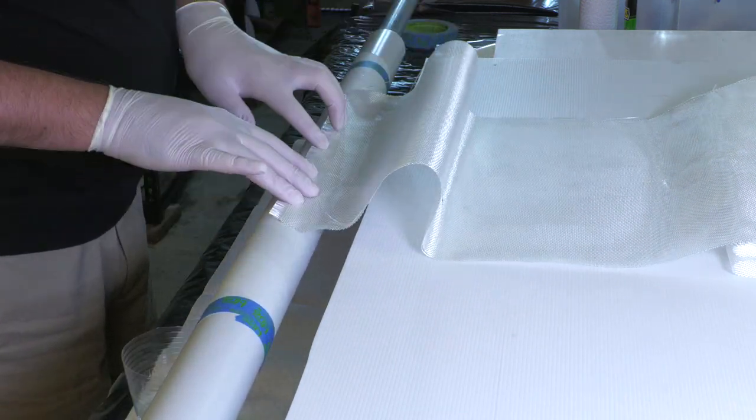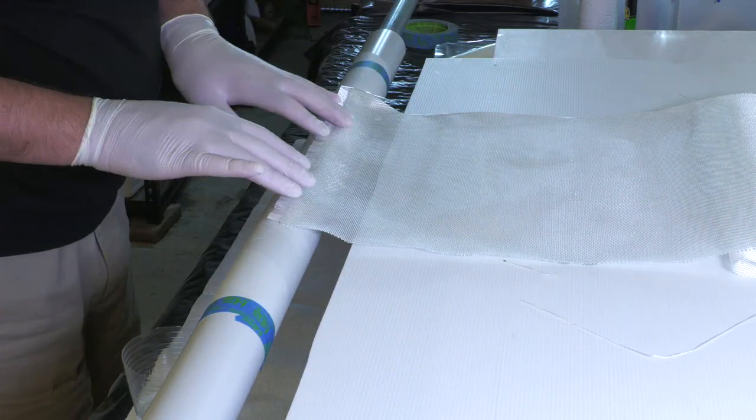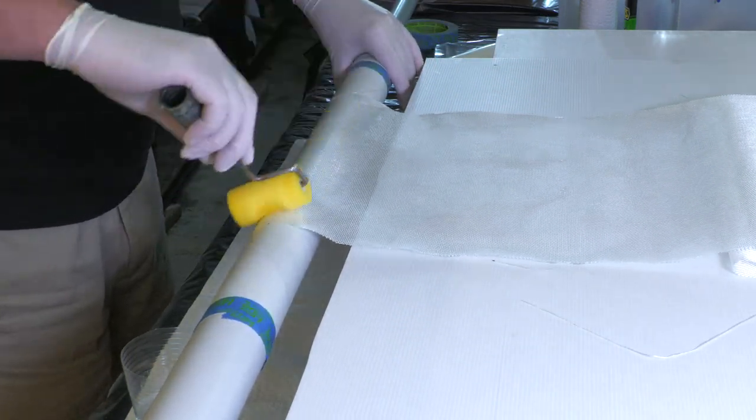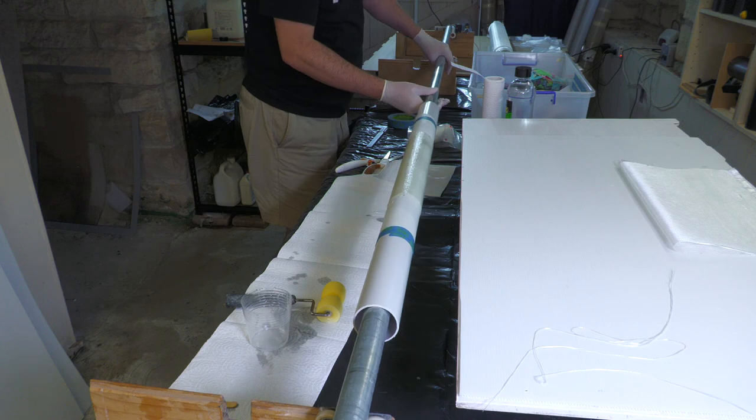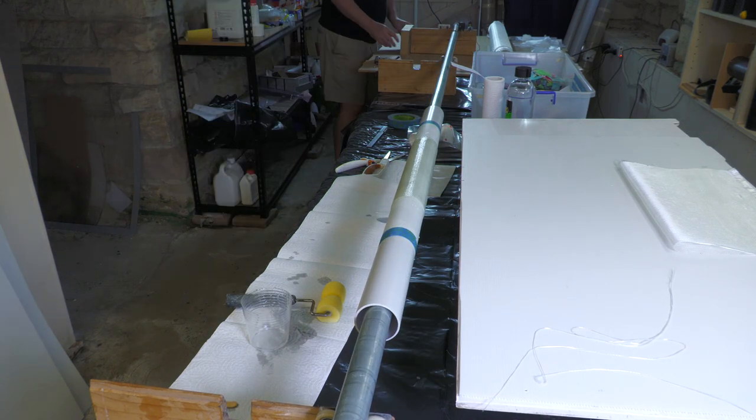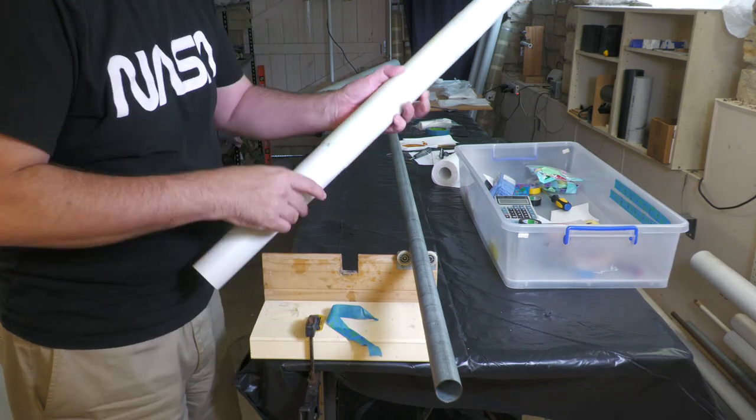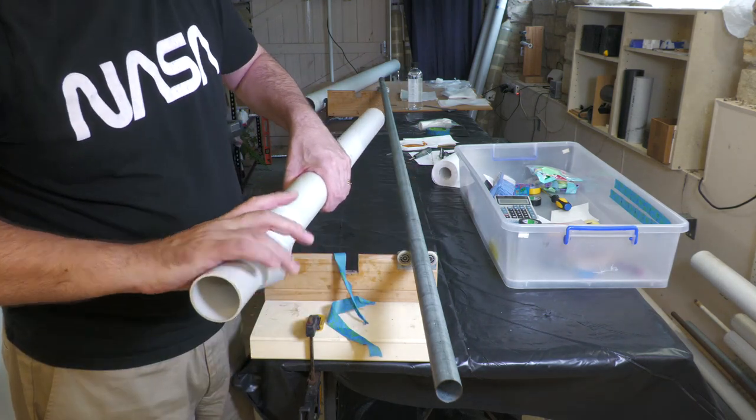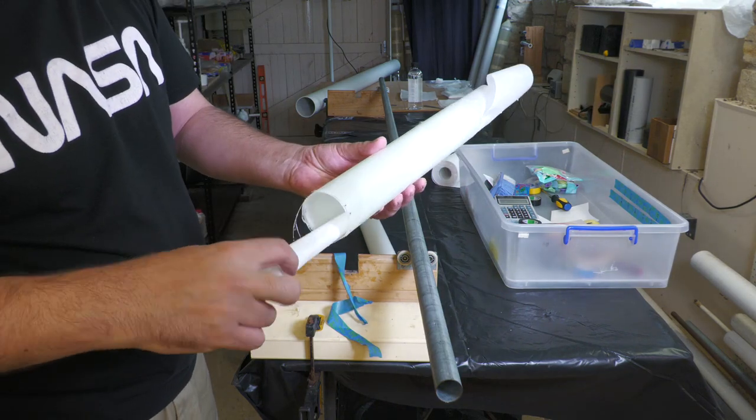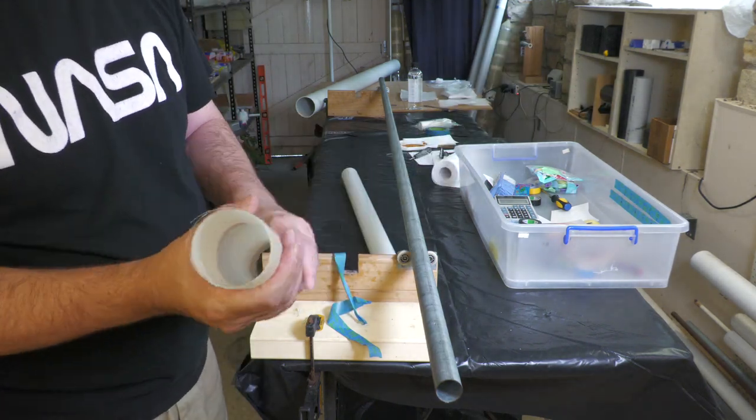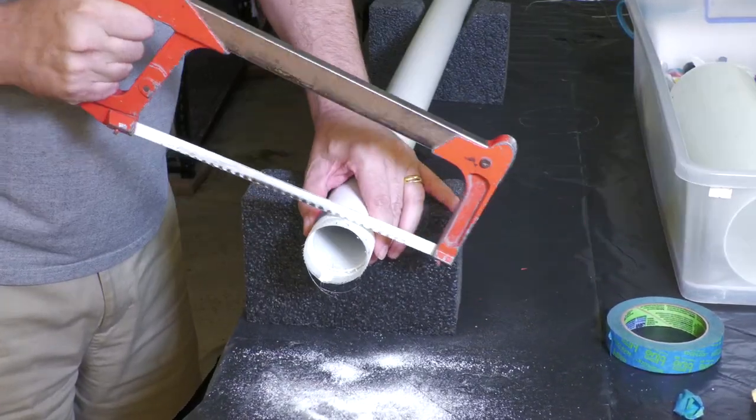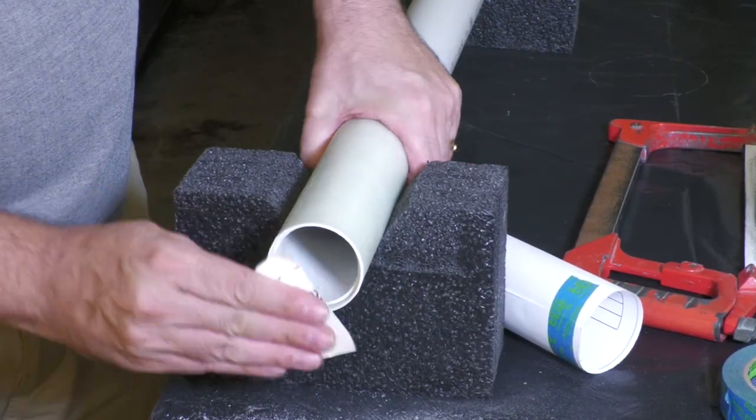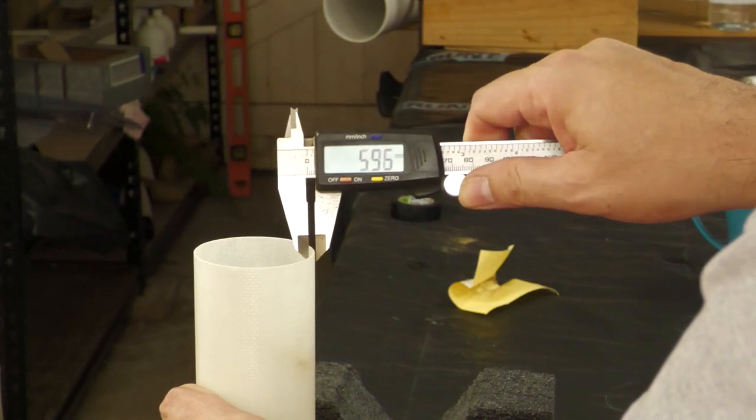The motor mount tube is 6 wraps of 200 gsm fiberglass. Having left it overnight to cure, we can remove the tube from the mandrel. It then again gets trimmed and sanded. And we end up with a wall thickness of 1.3 millimeters.